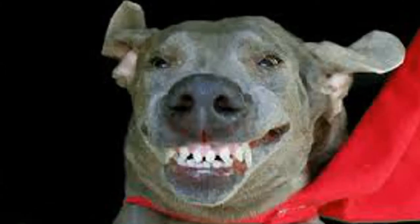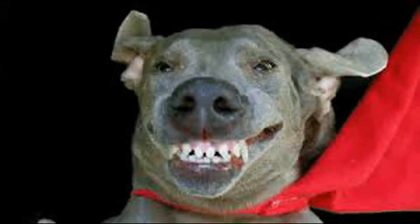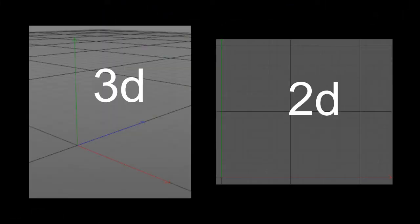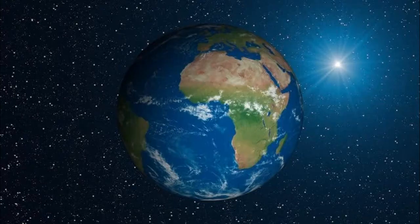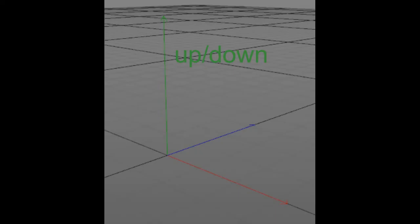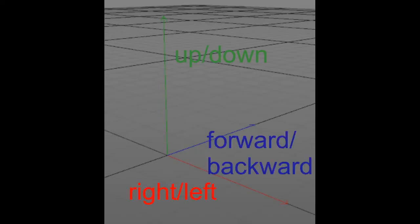Hello guys, and today I will be telling you what the 100th spatial dimension would look like. By spatial dimensions, I mean the amount of axes that an object can travel in. For example, the world we live in is 3-dimensional, and the axes that we can move in are up/down, right/left, and forward/backward.